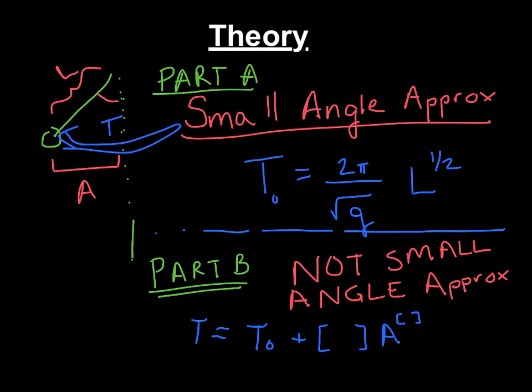But we're interested in better measurements now, so we're going to look for this correction term. So in part B, it's going to be your original period plus some constant as a function of amplitude raised to some power. It's a very small correction, less than a few percent. So you couldn't see it before, but now we can.